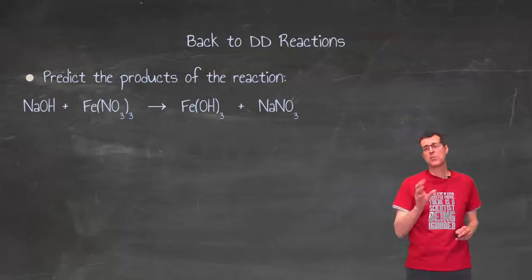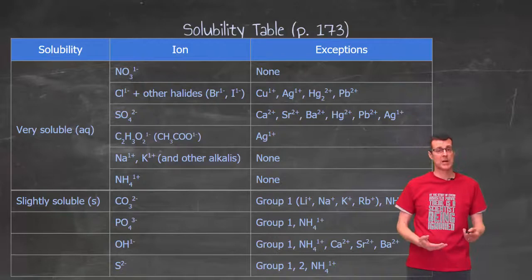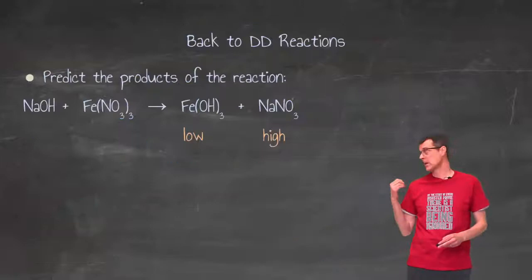Now, next job is to look at those products, find both of them on the solubility table. I don't have to worry about the reactants, just the products. Find them both on the solubility table, and identify them as either being high solubility, very soluble, or low solubility, slightly soluble.